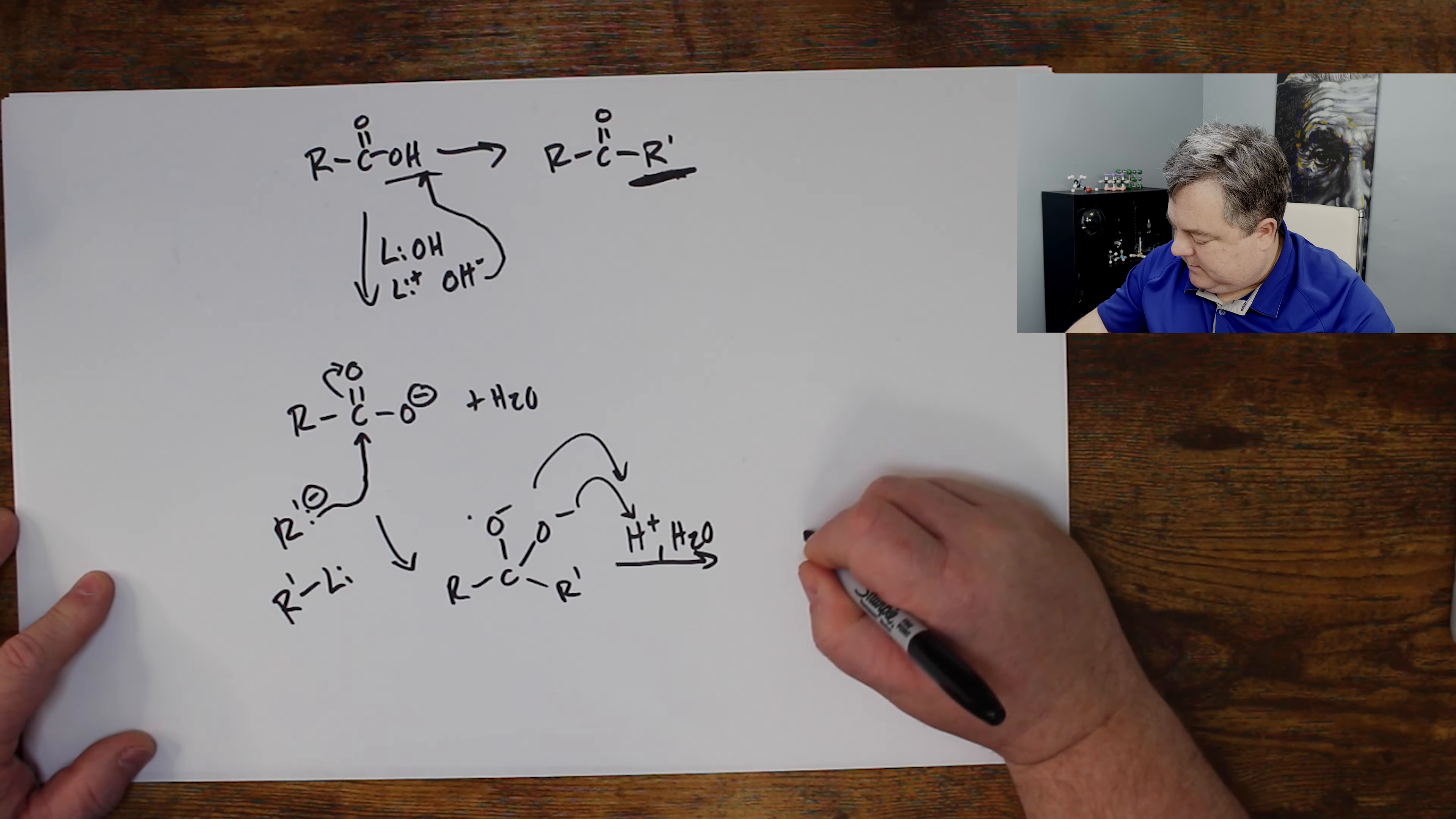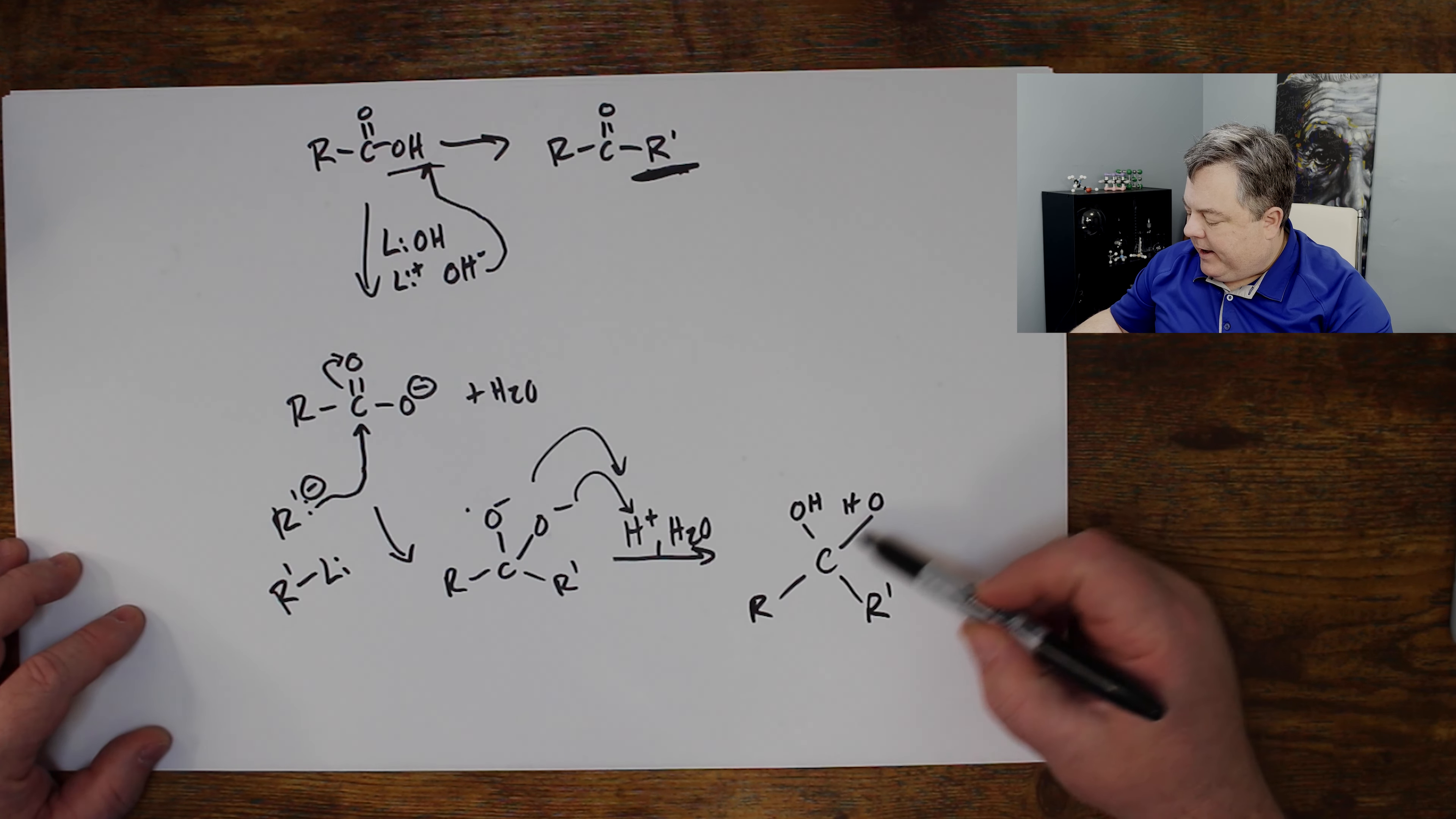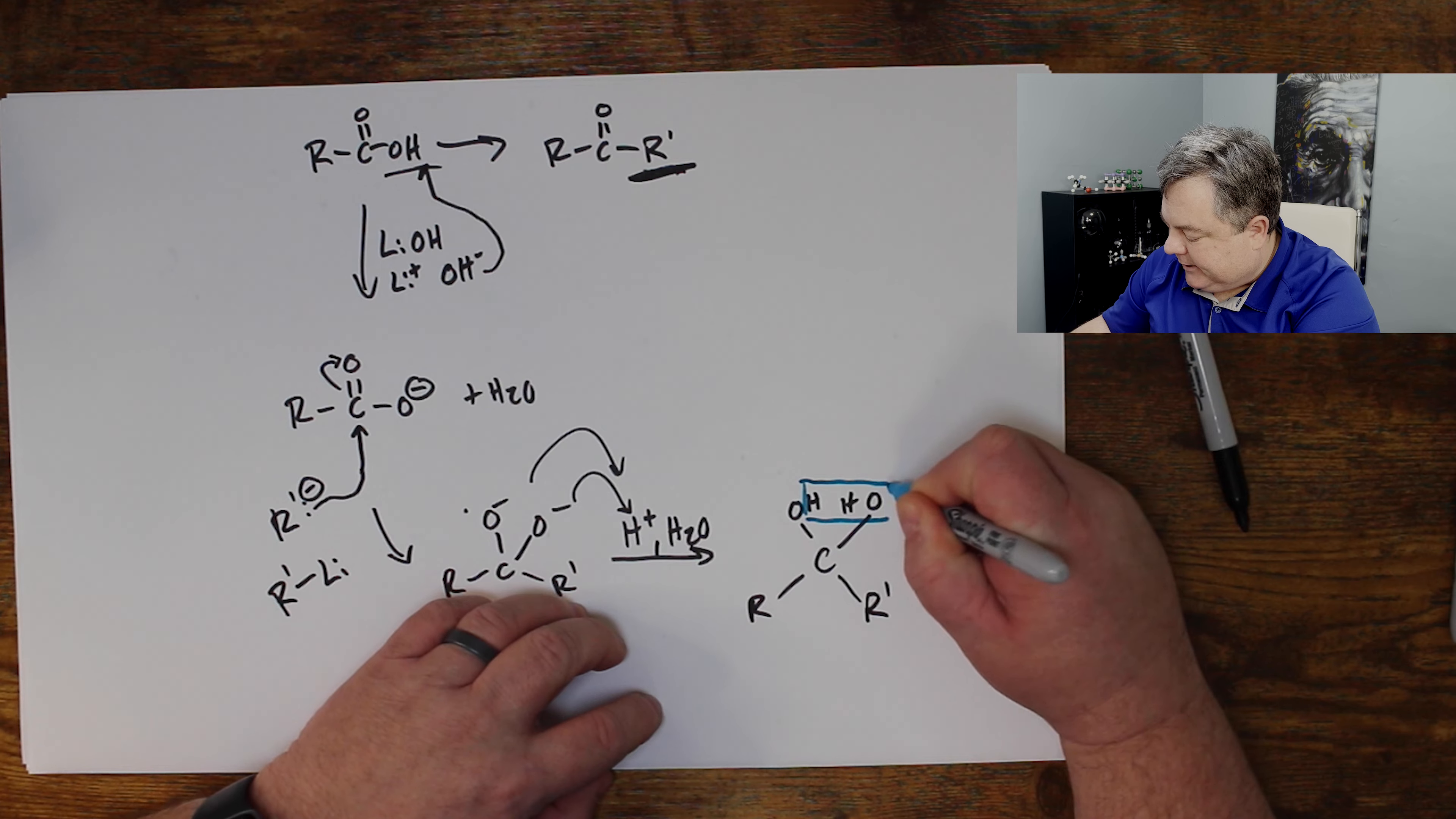When I add acid and water, I quench it. Both of these can grab that H plus, become OHs. And I want you to recognize what happens when you get to something weird like this. Here I have two alcohols on the same carbon. A geminal diol would be the fancy way to say that. But two alcohols on the same carbon.